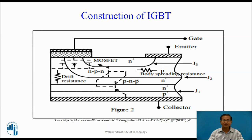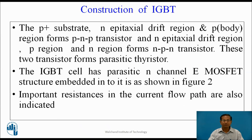In the construction of IGBT, the bottom P-plus region, the middle drain drift N region, and the body region form a parasitic PNP transistor. The upper N-plus region, body region, and drain drift region form a parasitic NPN transistor. The combination of these two transistors forms a parasitic thyristor. The MOSFET is shown by dotted lines, and the IGBT cell has a parasitic N-channel E-MOSFET structure embedded in it.